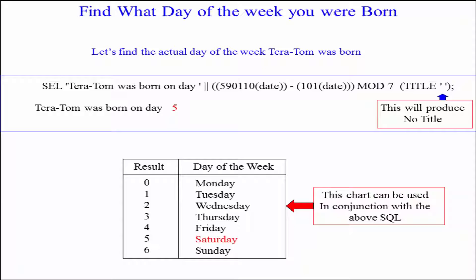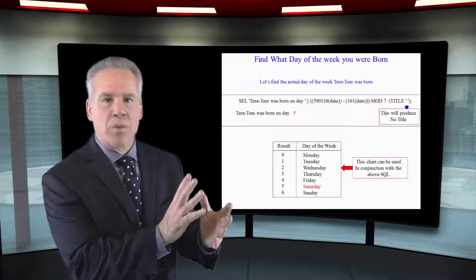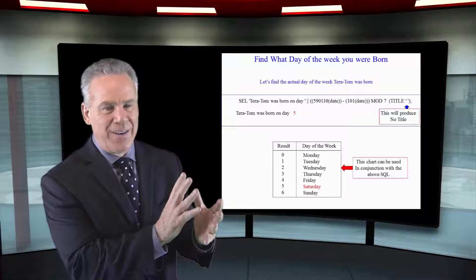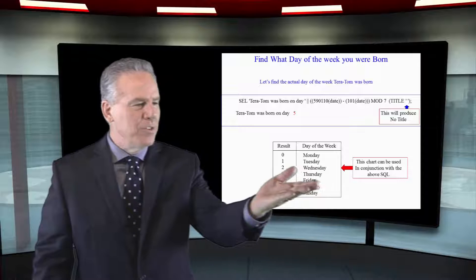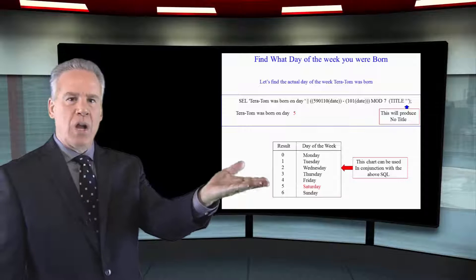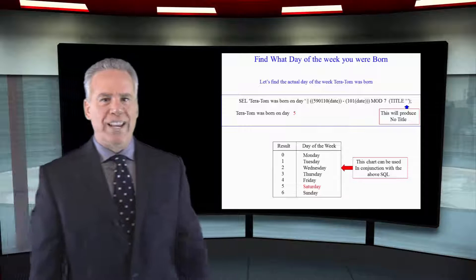Here's what a mod does. A mod says I want to divide by this number seven mod seven and I want you to take the remainder. And when that comes out Tara Tom was born on a five which was a Saturday.